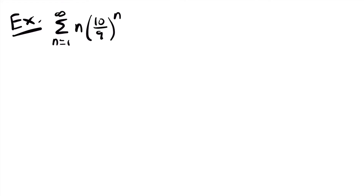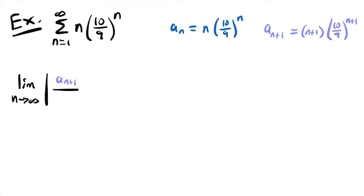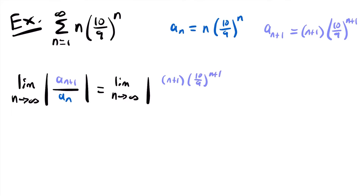We identify a sub n as n times 10 ninths to the power of n, and a sub n plus 1 by replacing each n with n plus 1, giving n plus 1 times 10 ninths to the power of n plus 1. Now we look at the limit as n approaches infinity of the absolute value of a sub n plus 1 divided by a sub n.